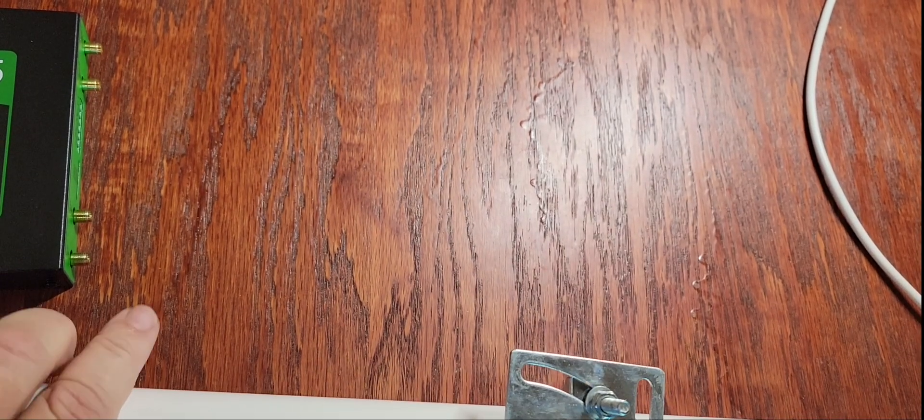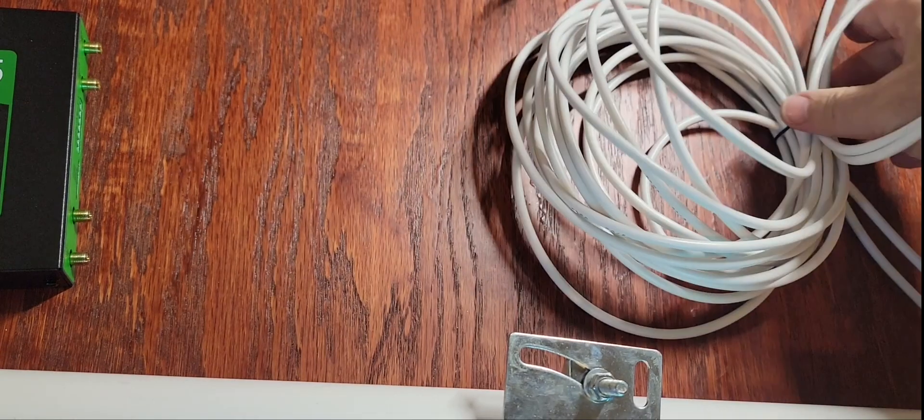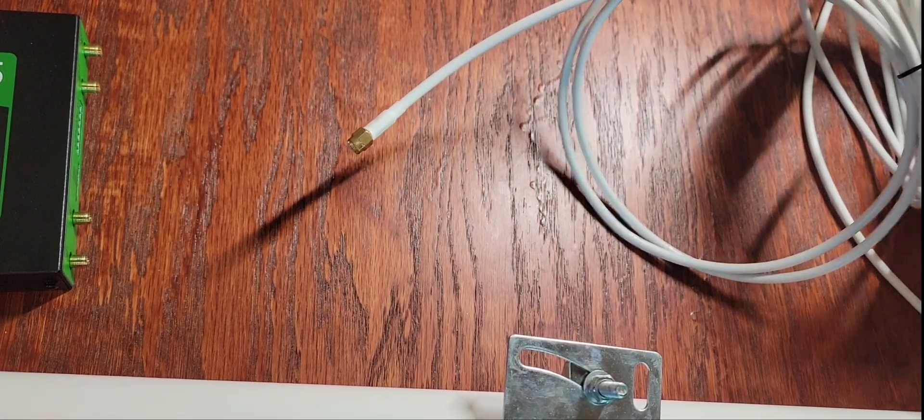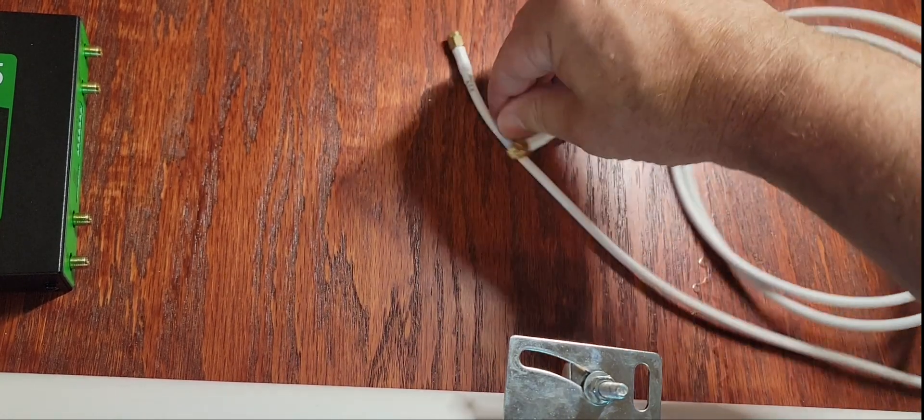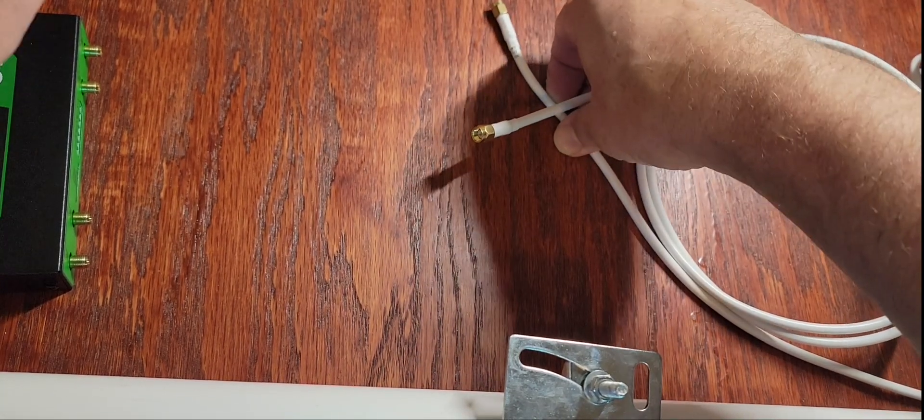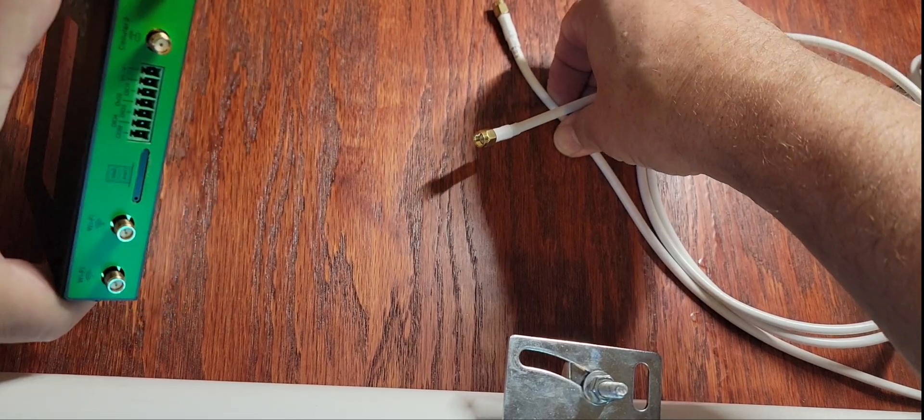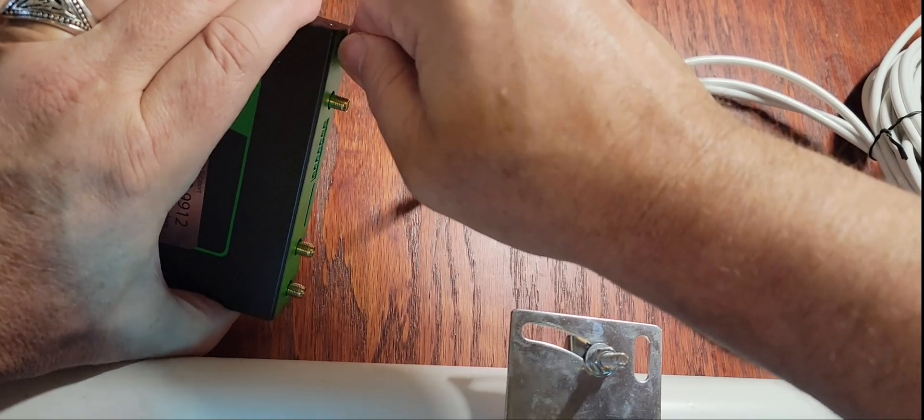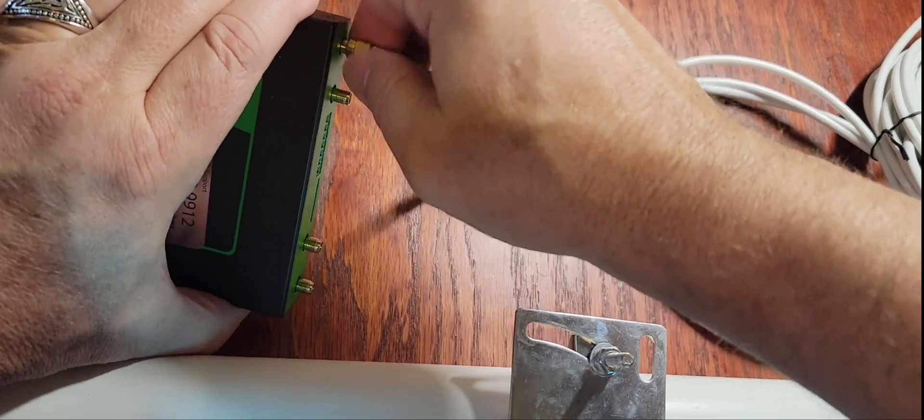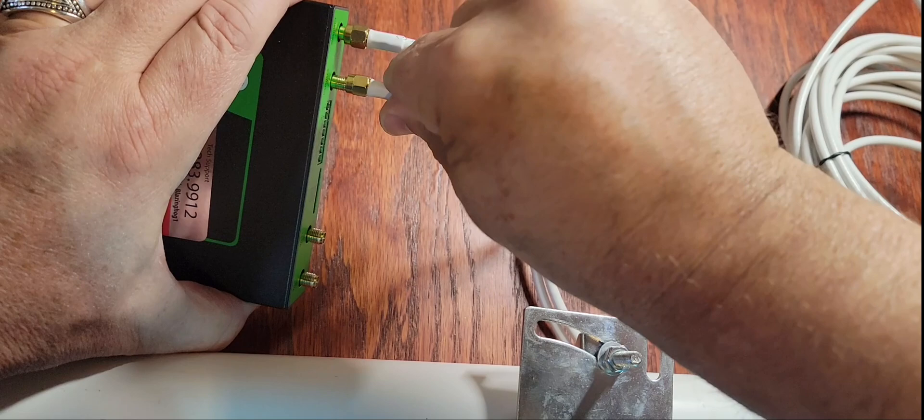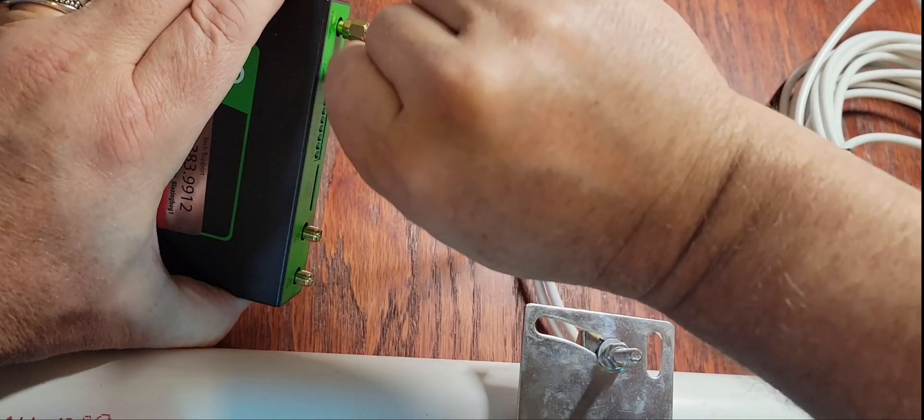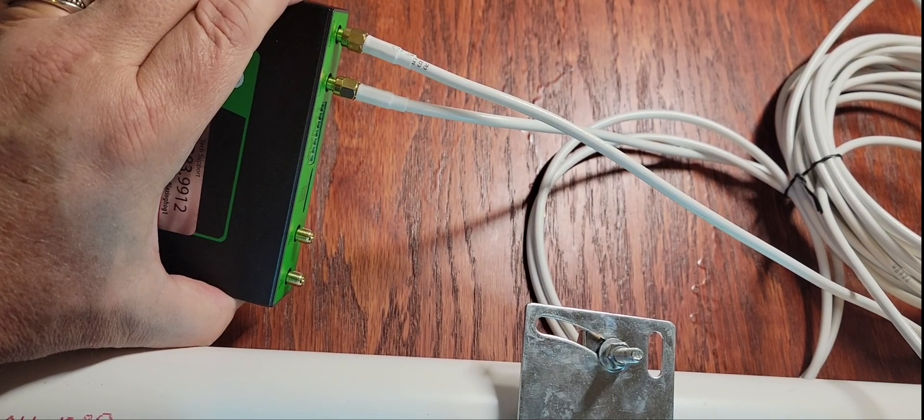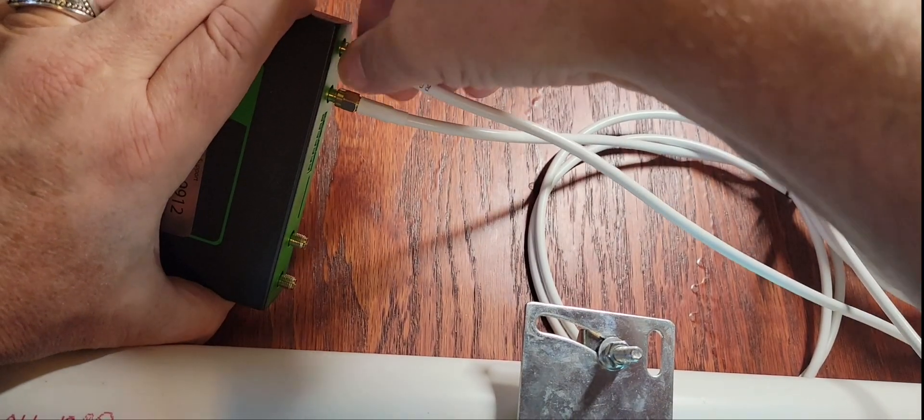Now at the other end of this, you're going to have these connections, and there's two of them. You have to use them both. On this particular modem you see Cellular 1 and Cellular 2. You just thread them on Cellular 1 and Cellular 2. The modem does use both antennas to send and receive data at the same time, so you want to connect them both or it'll run at half speed.